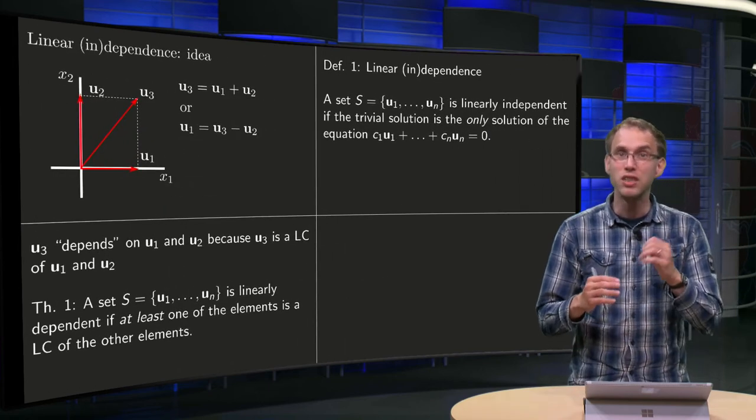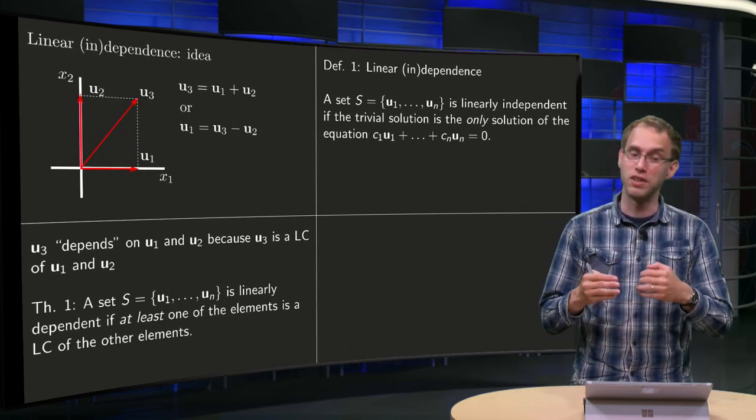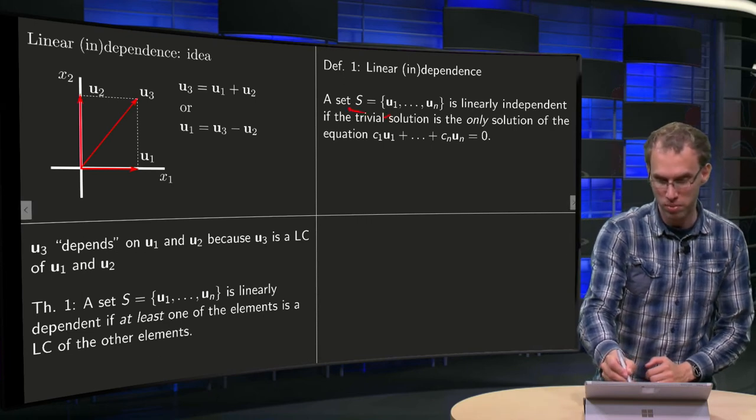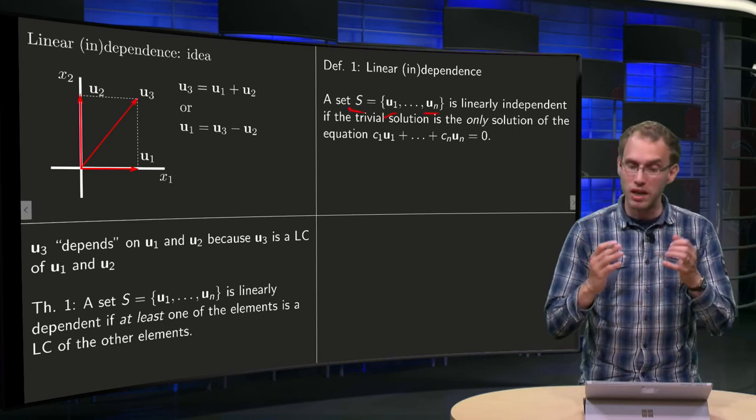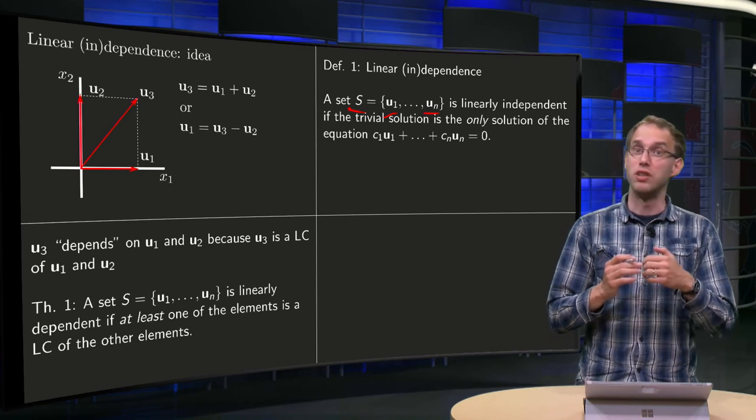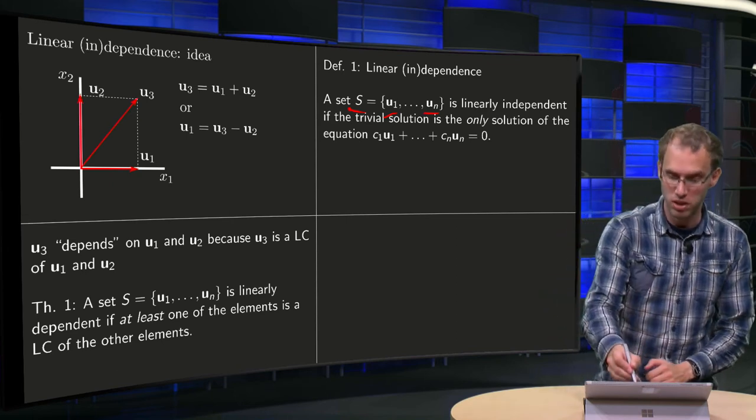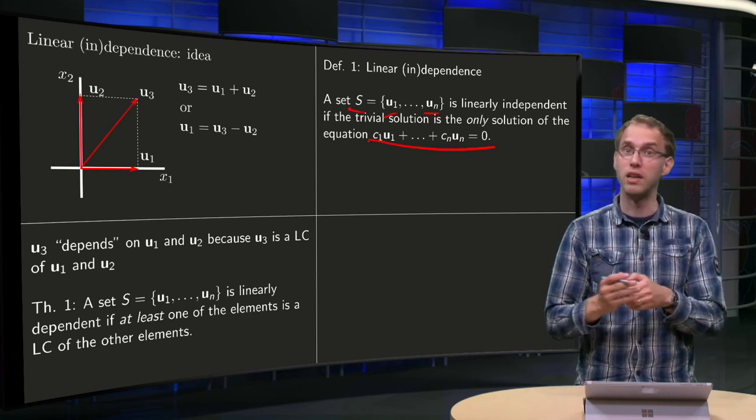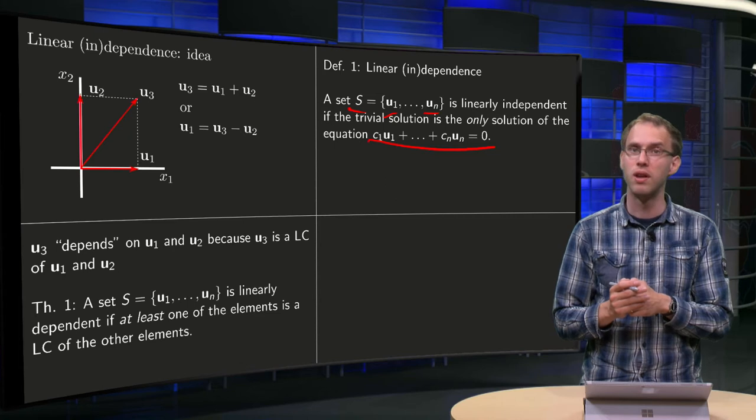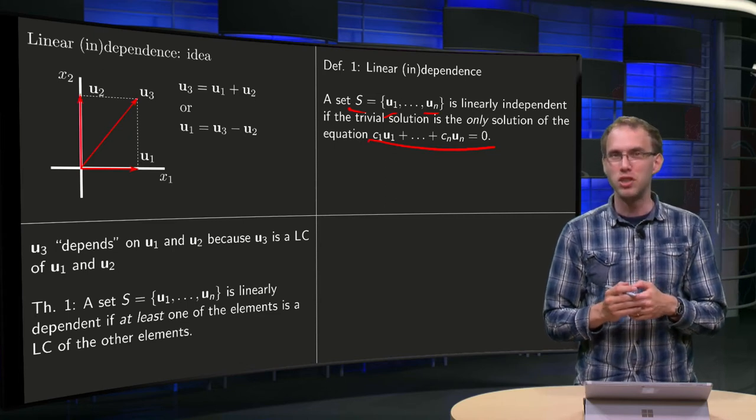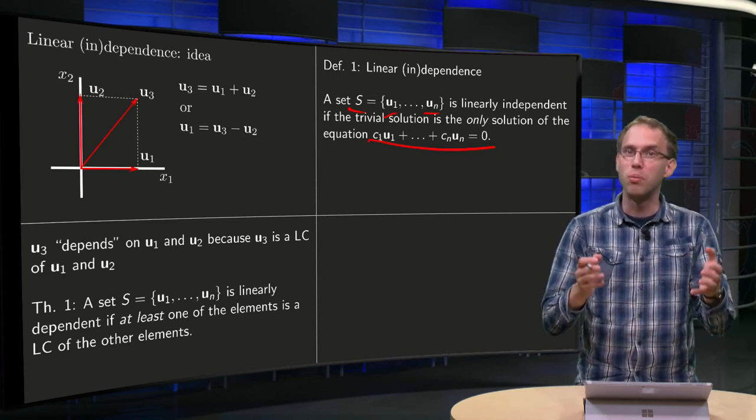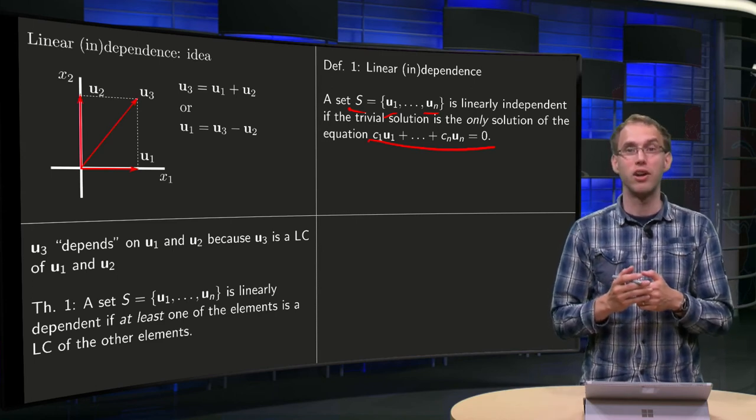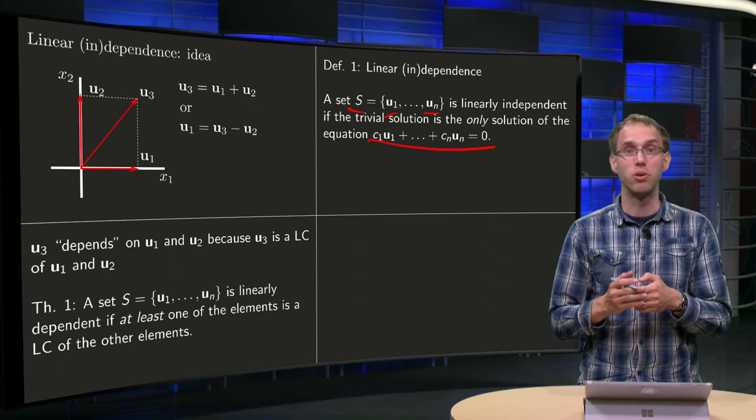So the definition of linear independence is slightly different. A set containing the vectors u1 up to un is called linearly independent, if the trivial solution is the only solution of this equation over here: c1 u1 plus c2 u2 up to cn un equals 0. What does it have to do with linear combinations?